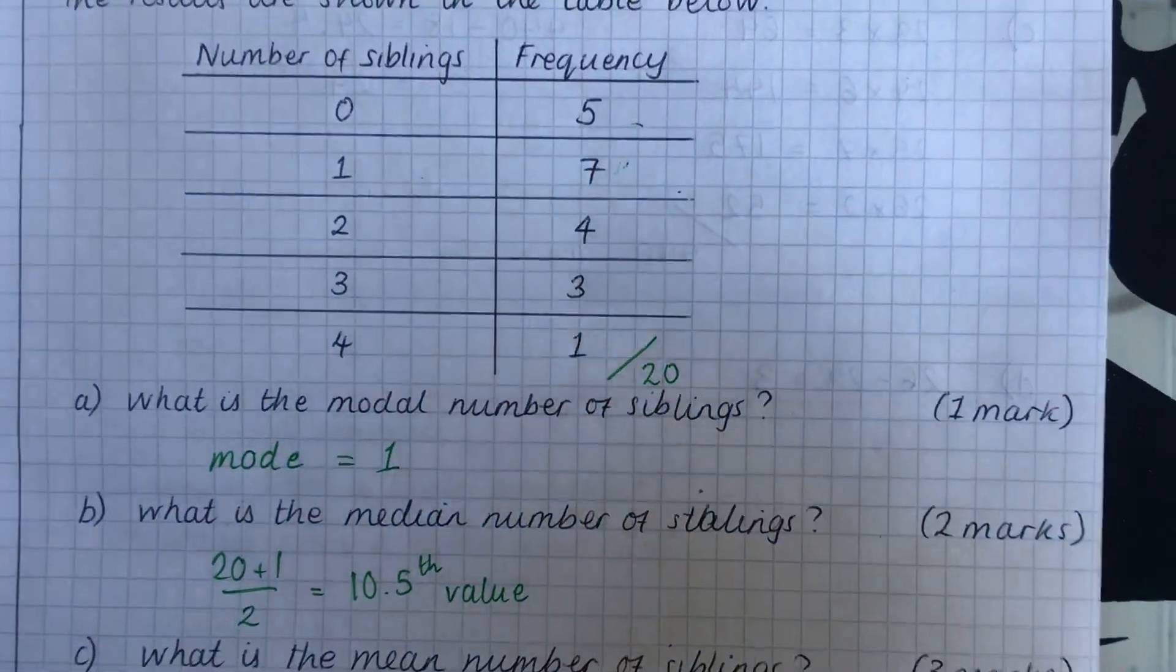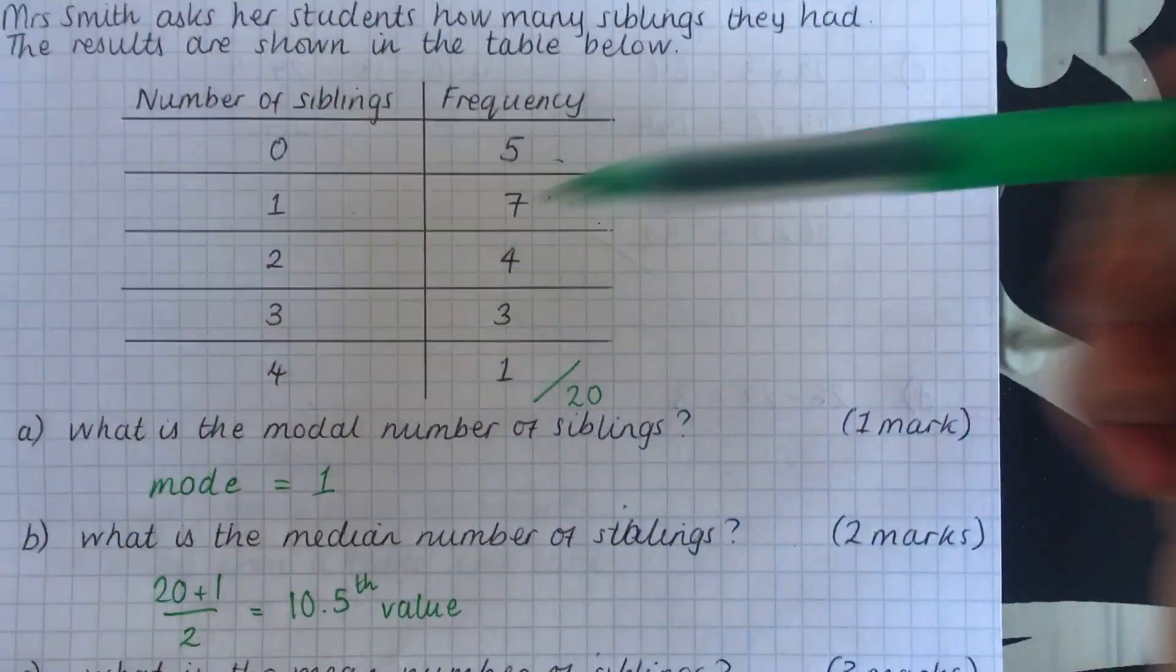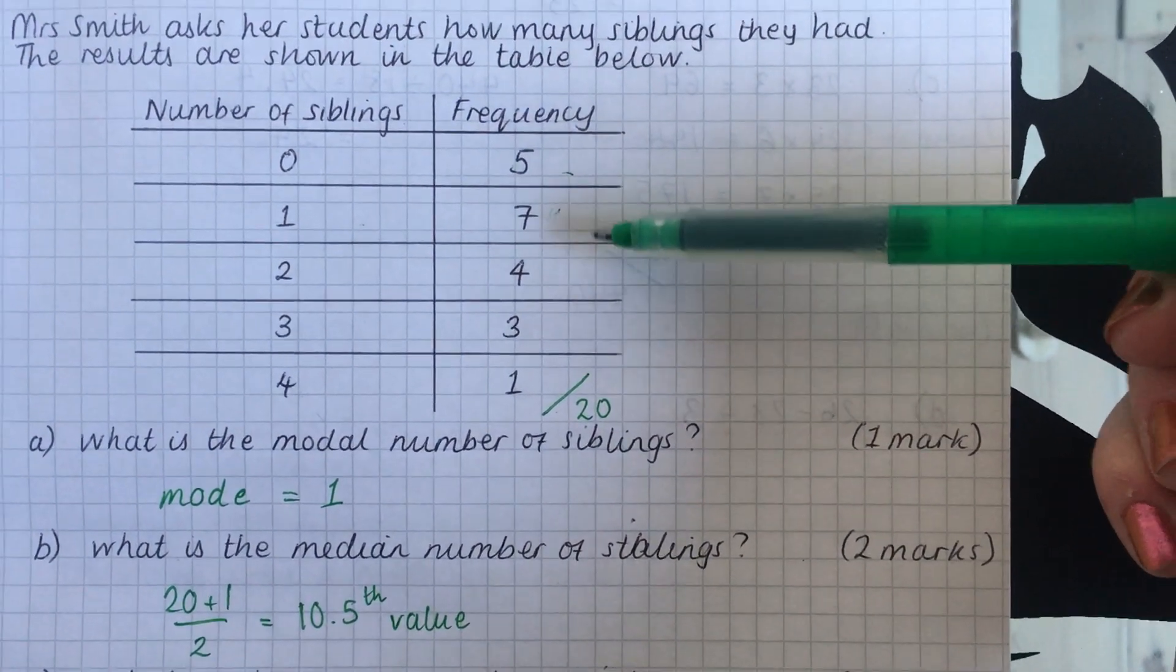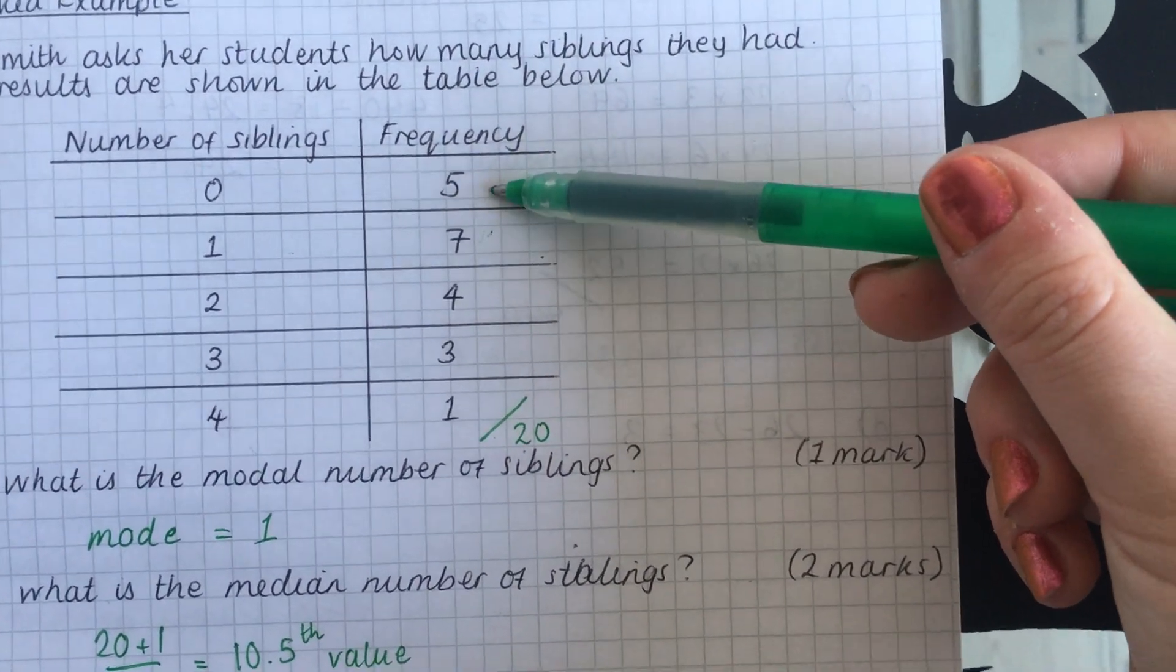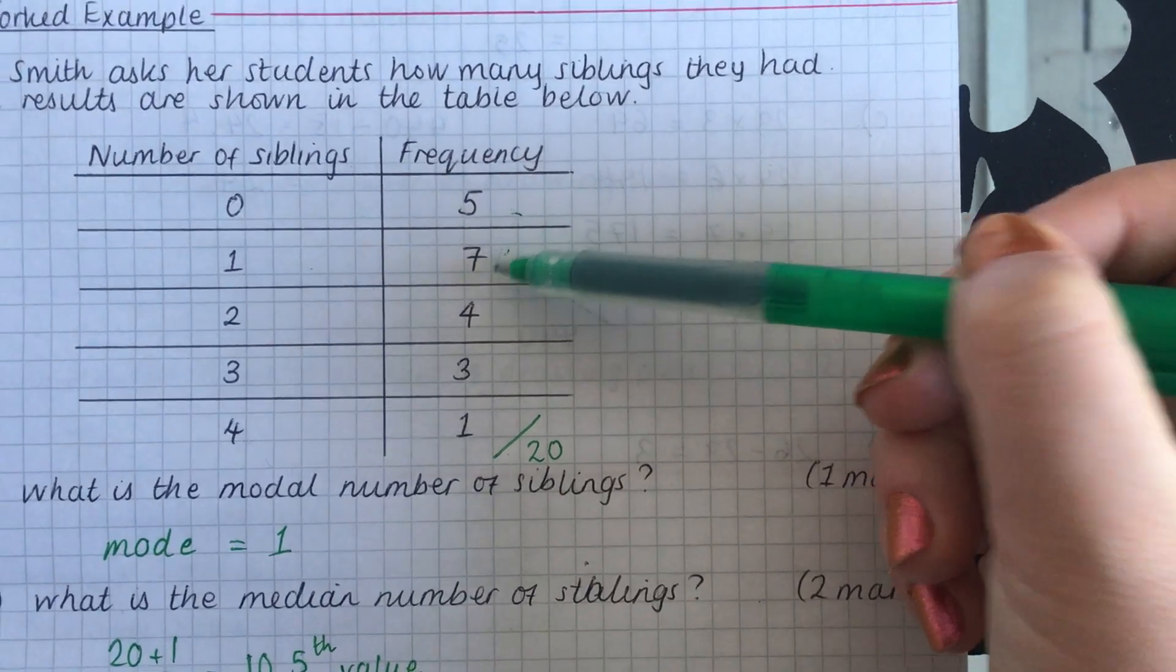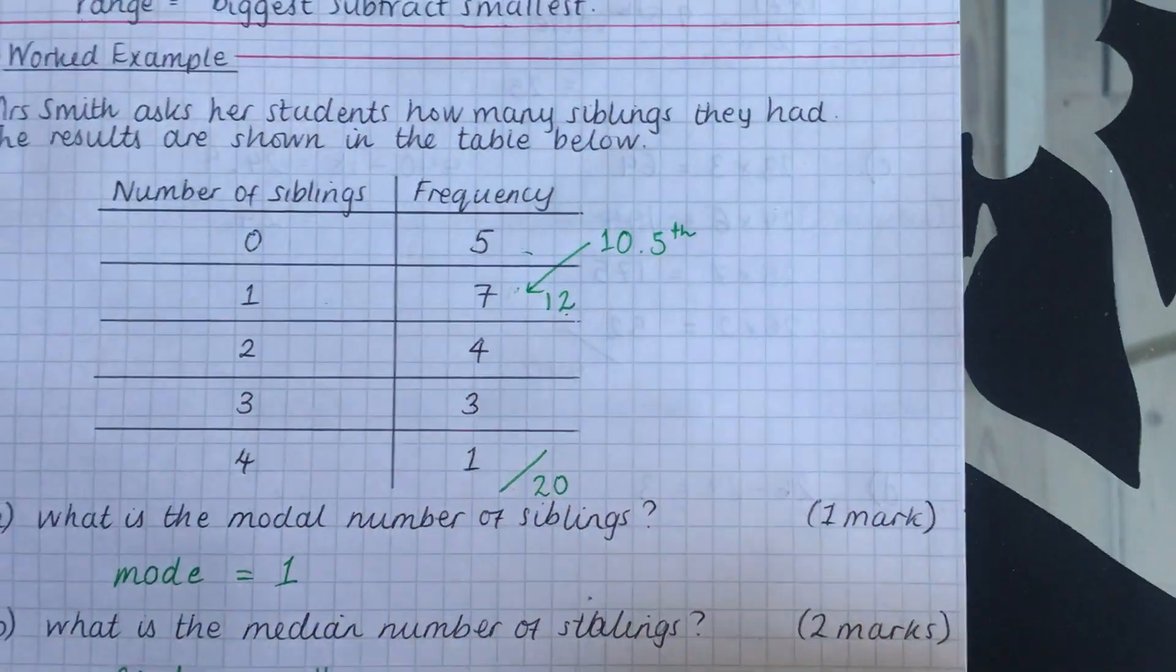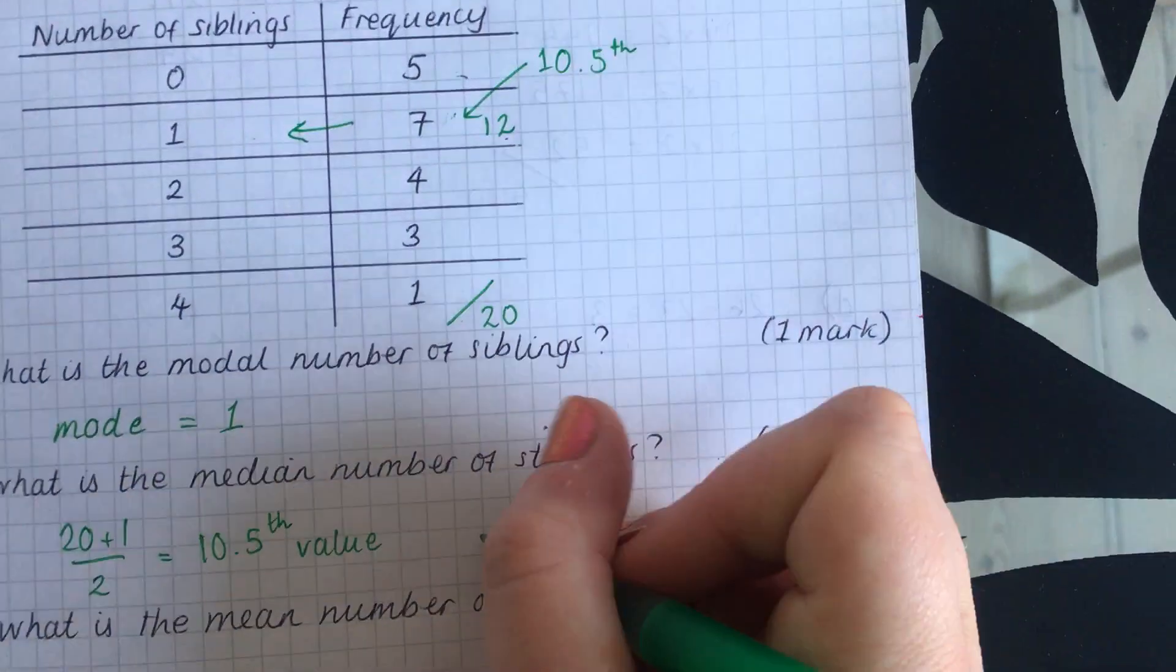Now, what this means is if you imagine that we did write out all of these as a list, if you imagine we put five zeros, then seven ones and four twos, we're looking for the 10.5 number. Now we don't have to actually write them down in the list because that would take ages. What we can do is look down the frequency column, add up as you go. And when you get beyond the 10.5 value, you know that it's going to be in that row. So the first five numbers are zero. So we're not at the 10.5 number yet. Now, if you then put seven ones, that adds up to 12 numbers altogether. And we know that therefore the 10.5 value must be in this row because 12 has gone beyond the 10.5 number. So that means not seven is the median.